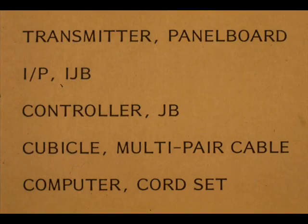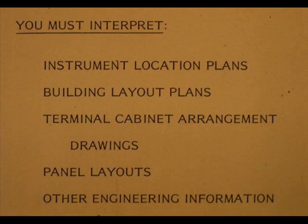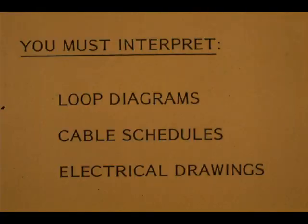Before we study a specific loop, we will recap what we have learned. First, an electronic loop consists of several house and field items. Second, you must be able to find these loop items. You will have to use instrument location plans, building layouts, terminal cabinet arrangement drawings, panel layouts, and other pertinent engineering information. Third, you must be able to interpret loop diagrams, cable schedules, and other electrical drawings.